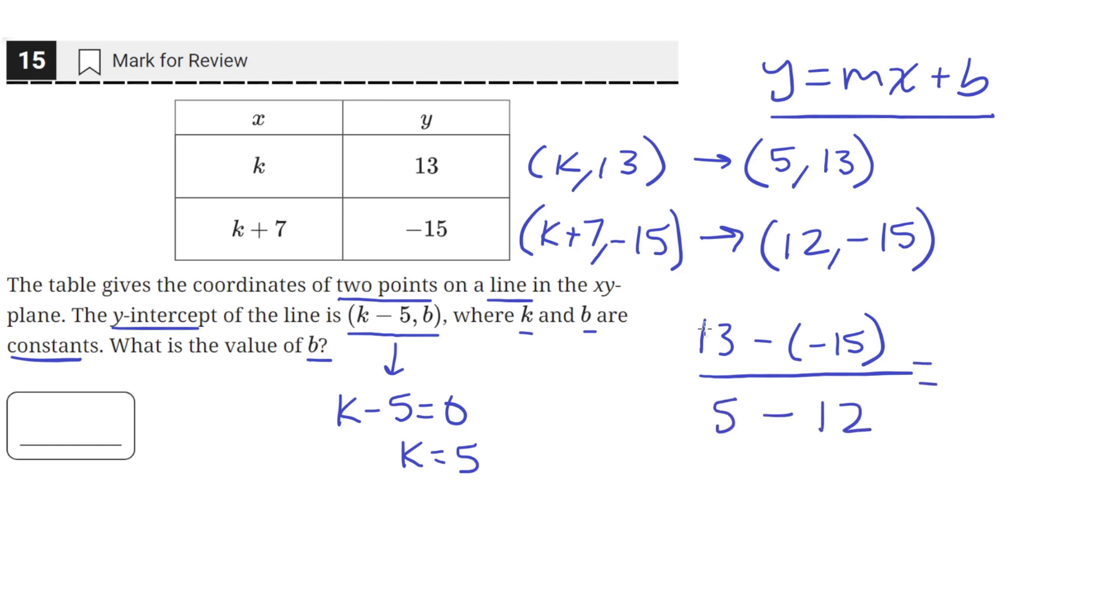which will give us 13 minus negative 15 is just 13 plus 15, which is 28. And then 5 minus 12 is negative 7. So the slope, or our m value, is negative 4.